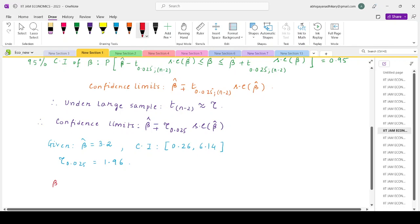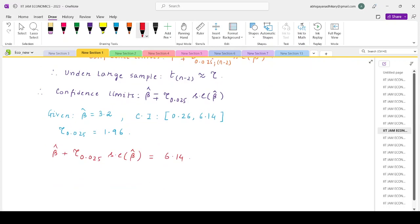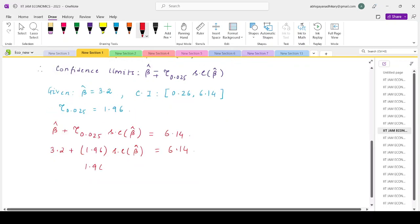If I take the upper confidence limit, beta hat plus tau of 0.025 into standard error of beta hat, this value has been given to be 6.14. Beta hat is 3.2, tau is 1.96 and standard error of beta hat is what we are supposed to find out. So if we evaluate this, the standard error of beta hat is 2.94 divided by 1.96, which gives you 1.5.